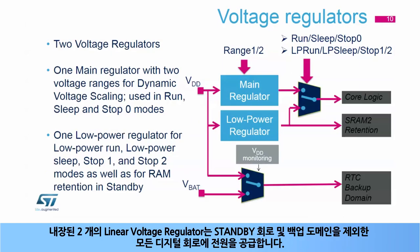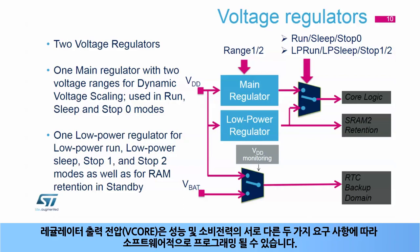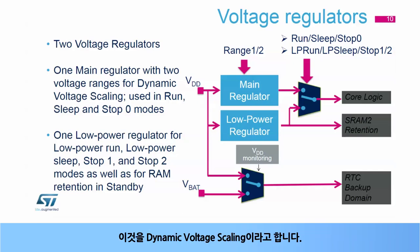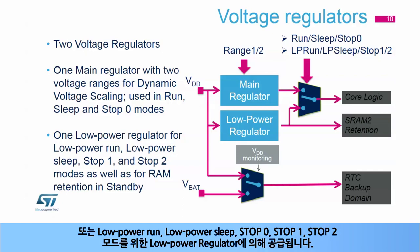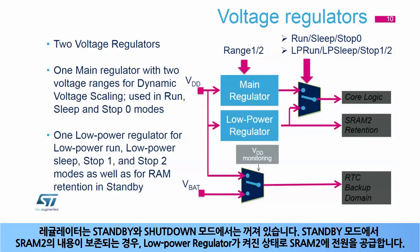Two embedded linear voltage regulators supply all digital circuitries except the standby circuitry and backup domain. The regulator output voltage, or V-Core, can be programmed by software to two different values depending on performance and power consumption requirements — this is called dynamic voltage scaling. Depending on the application mode, V-Core is provided either by the main voltage regulator for run, sleep, and stop zero modes, or by the low-power regulator for low-power run, low-power sleep, stop zero, stop one, and stop two modes. The regulators are off in standby and shutdown mode. When SRAM 2 content is preserved in standby mode, the low-power regulator remains on and provides the SRAM 2 supply.